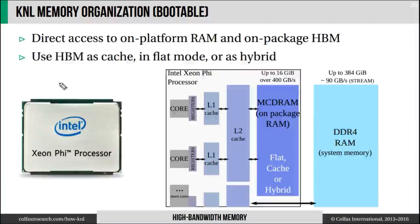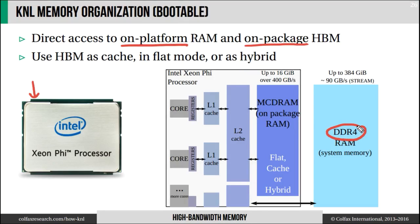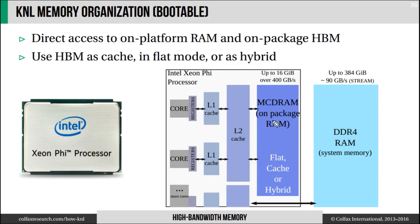If you have a bootable Knight's Landing processor, it has access to two types of memory: on-platform and on-package. The on-platform memory lives on the system board in the form of standard DDR4 modules. It can be in the hundreds of gigabytes in size and the bandwidth it can deliver is over 90 gigabytes per second. The on-package memory is fused onto the chip. It is based on the MCDRAM technology. It is exactly 16 gigabytes in size and the bandwidth it can deliver is over 400 gigabytes per second.